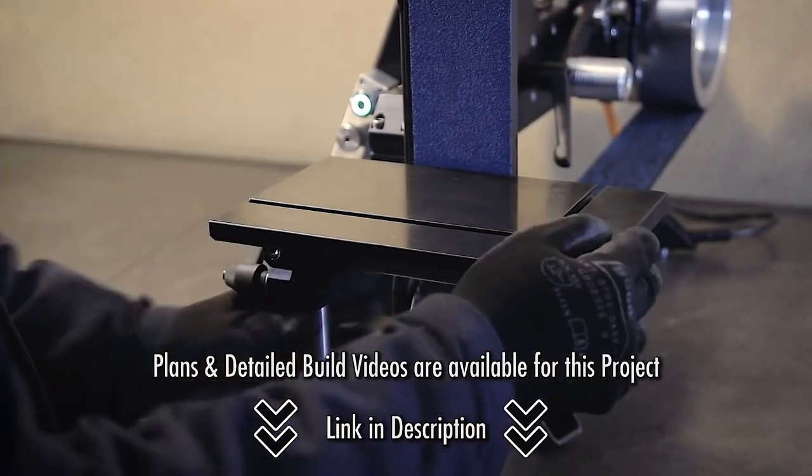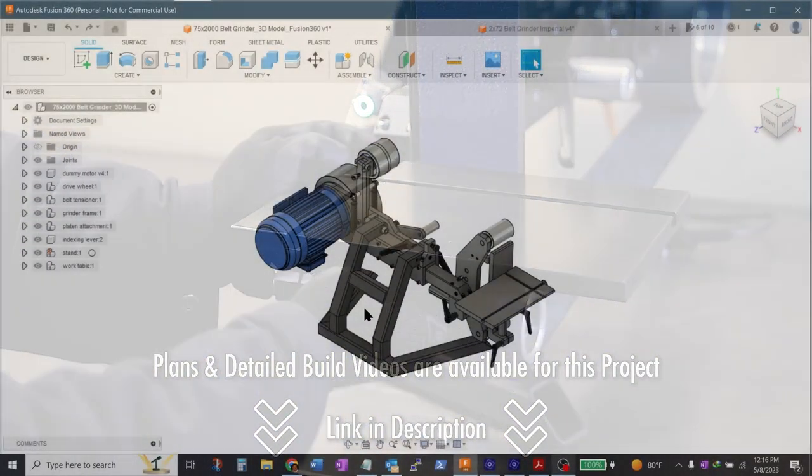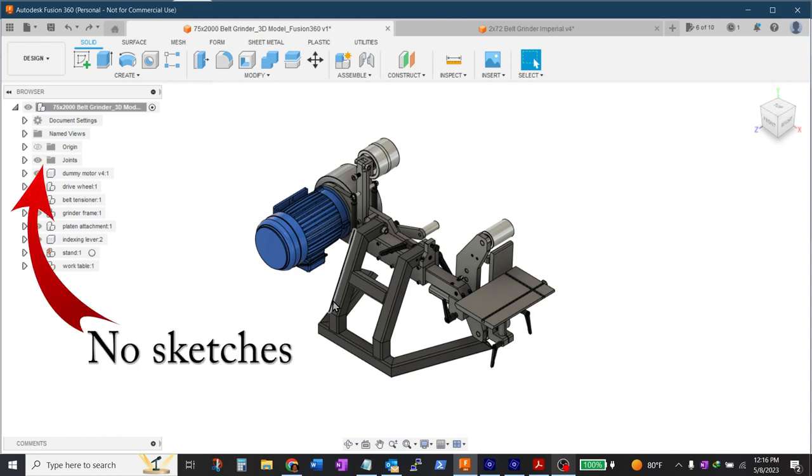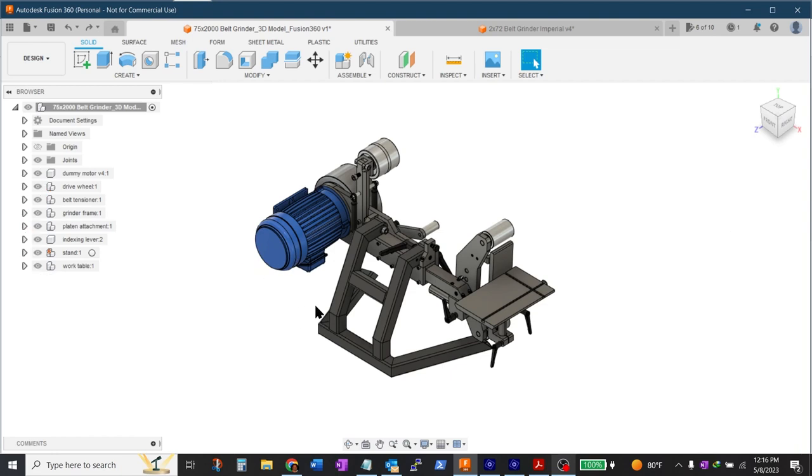Phil's plans include the Fusion 360 file as shown here but they don't include the underlying sketches and the modeling history. I thought that if I had the sketches and the history that it'd be simple to make the changes in Fusion 360 for my imperial measurements and everything would easily flow to give me the final dimensions.